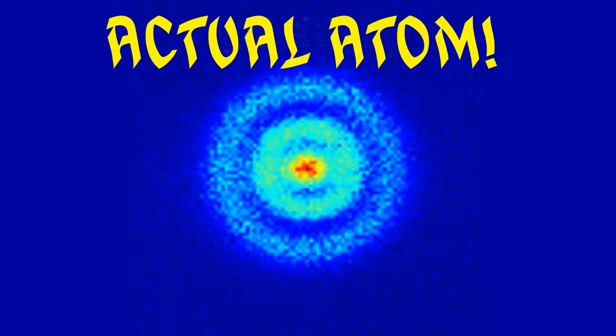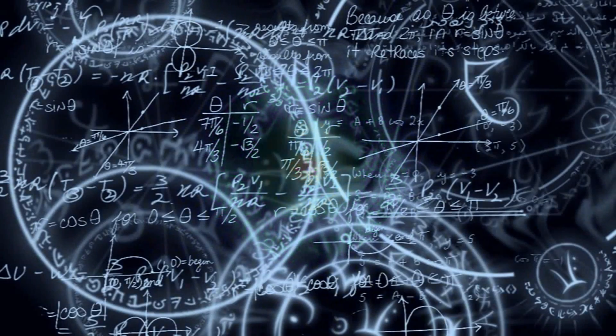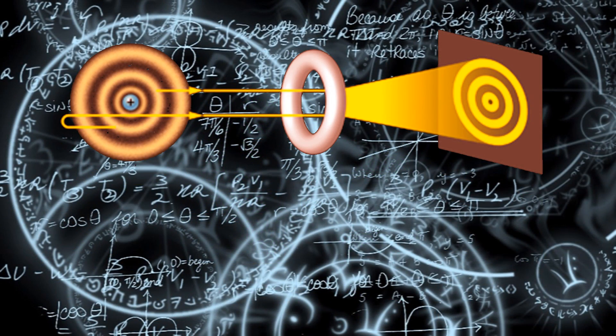What you're looking at is the first direct observation of an atom's electron orbital, an atom's actual wave function. To capture the image, researchers utilized a quantum microscope. Scientists blasted a hydrogen atom with lasers and ionized electrons escaped, and these are the images we got.